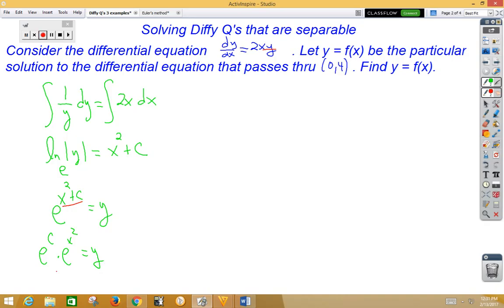Now, e is a number, and c is a number, so all this really is is one big old constant. So we're going to call it big C. e to the x squared is equal to y.